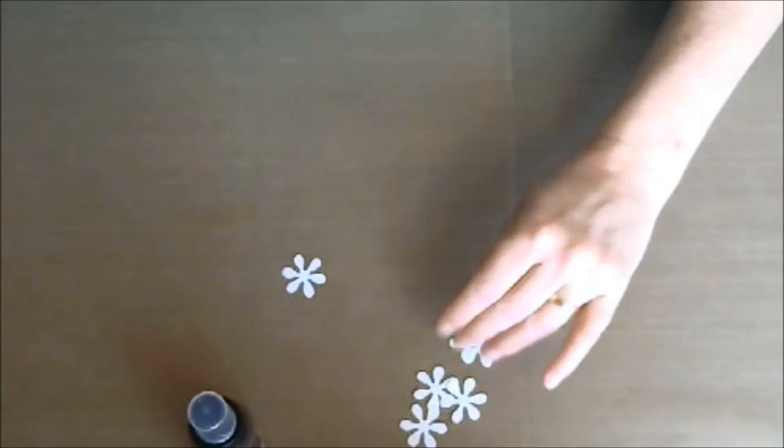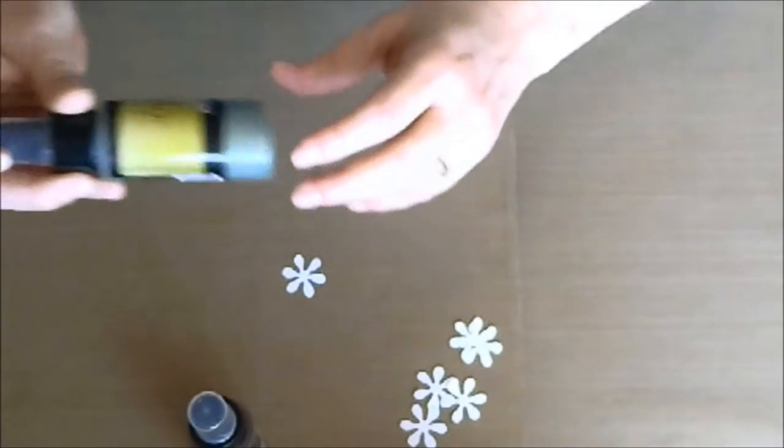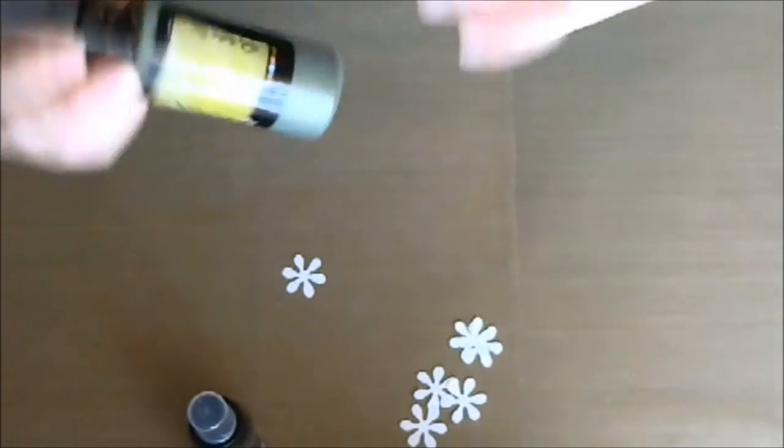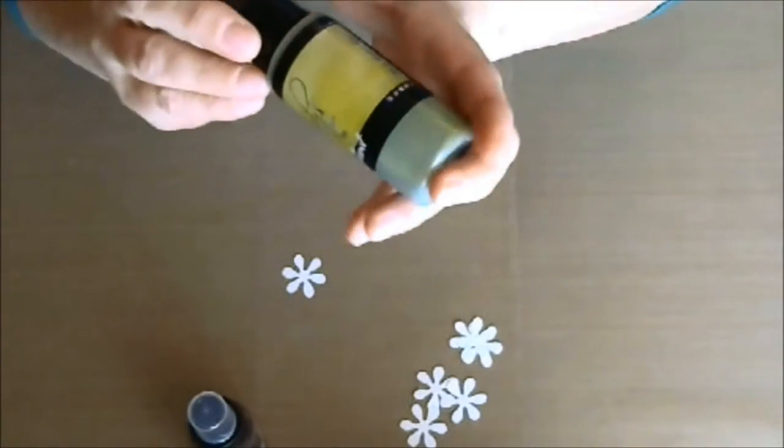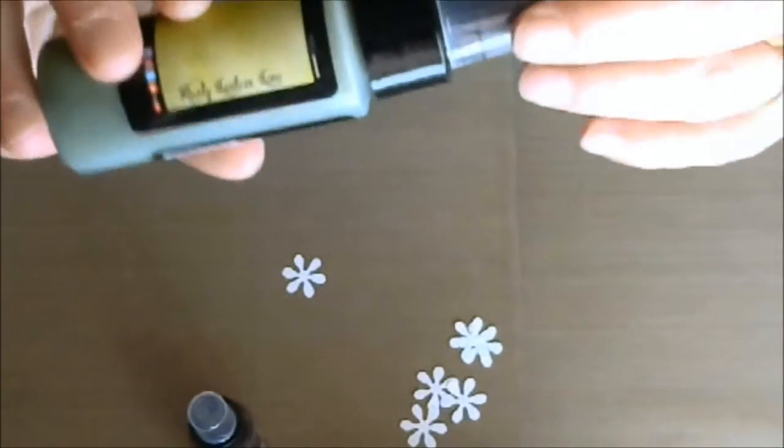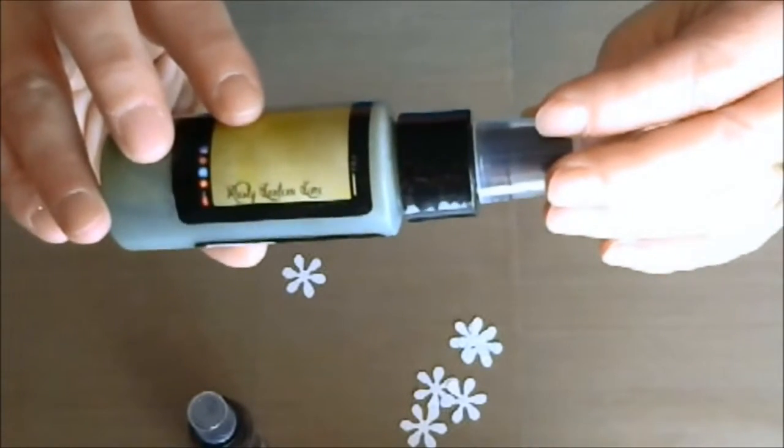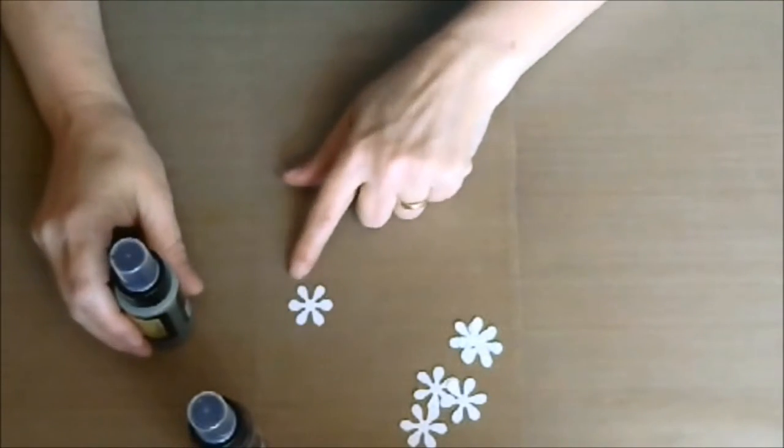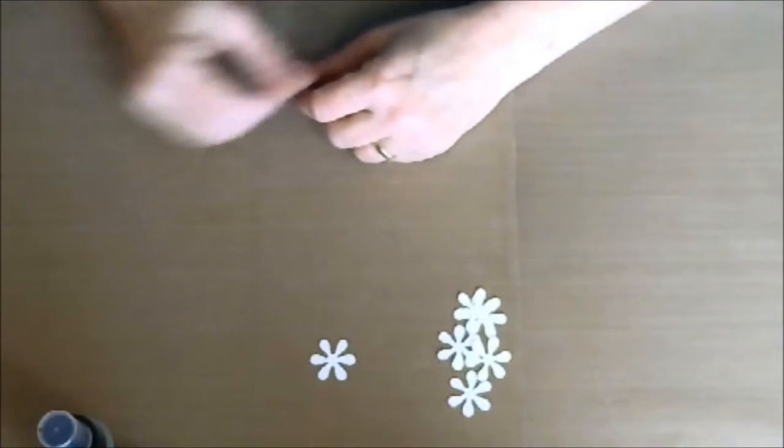And then for the bottom, the green leaf part is also a Lindy's Stamp Gang. This one is Rusty Lantern Lime. So I'll use that for my bottom one. So let's get these sprayed, and I'll be right back.